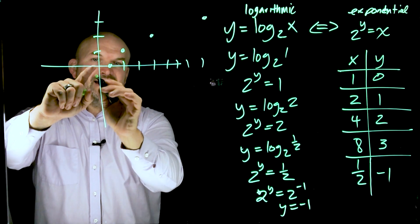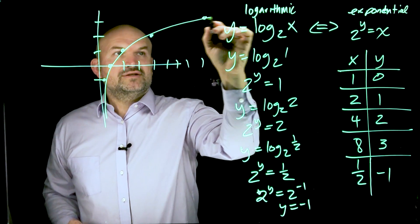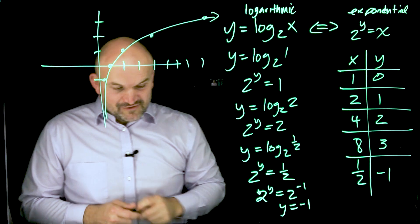And then I have at 1 half, I have a negative 1. So now you can see that this graph is looking something like this. Now this is very, very important because